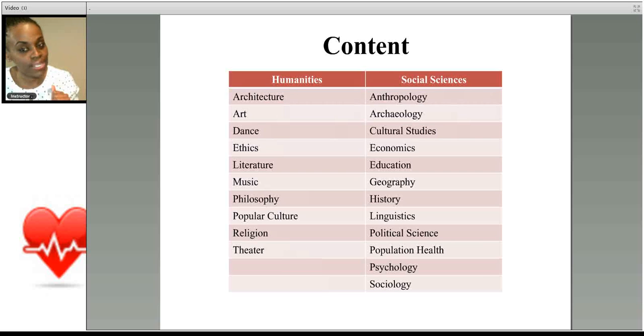So the humanities include a wide range of subjects, from architecture and art to dance and ethics, literature, music, philosophy, popular culture, religion, and theater. So you can have a passage that describes a concept or event or people, famous people in any of these categories.